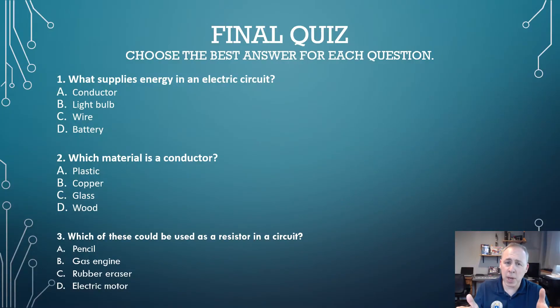All right, you probably didn't know this was coming, but we're going to do a final quiz. We've gone through our lesson. We've gone through the practical application in the lab. So let's answer six questions just to make sure you've got it up here in your head ready to go. So question number one, what supplies the energy in an electric circuit? Is it a conductor, a light bulb, a wire, or a battery? Well, if you've answered battery, that would be correct. Battery is what supplies the energy, the chemical energy that moves the electrons in an electric circuit.